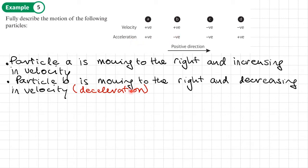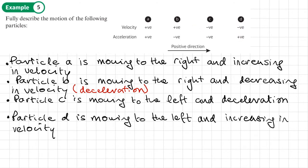When something is decelerating, that's the same as a negative acceleration, slowing down. This can also be called retardation as well. Particle C is moving to the left, and it's decreasing in velocity. I will use the word deceleration here. Particle D is moving to the left, but it is increasing in velocity.